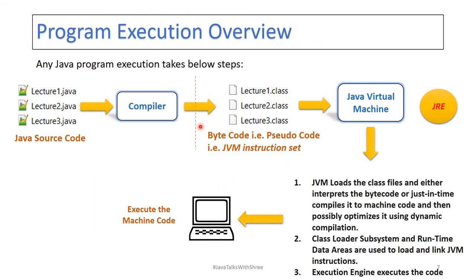Now we will take an end-to-end program execution overview. Up till now what we have seen is: the Java compiler compiles your source code file, your bytecode — that is the JVM instruction set — is created as .class files. Then your Java Virtual Machine comes into picture. This part belongs to JRE. What it does is the JVM loads all the class files, interprets or just-in-time compiles them, and runs the bytecode by converting it to machine code. That is the key point to understand. So this is the end-to-end Java program execution overview.